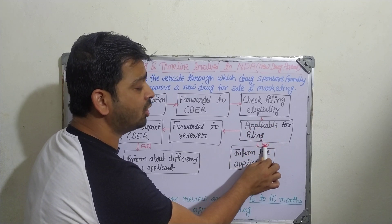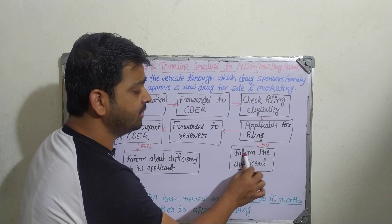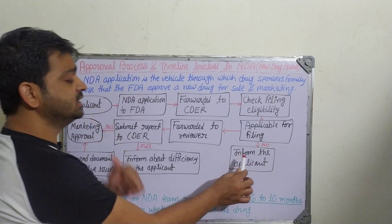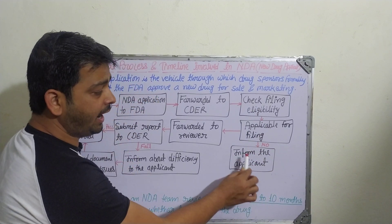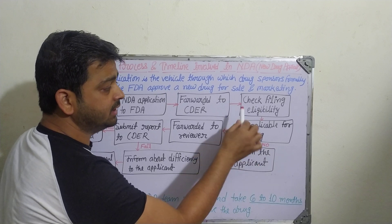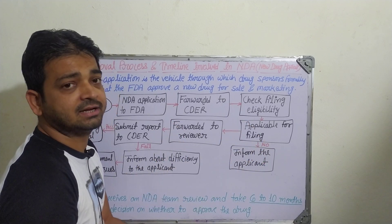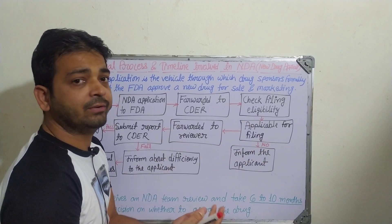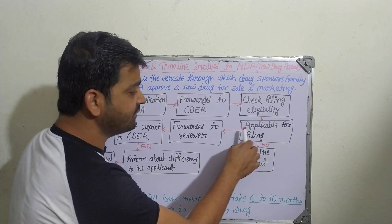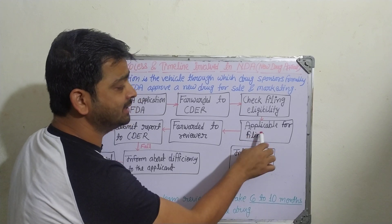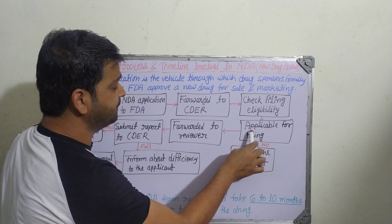If the application is found not applicable for filing, they will inform the applicant — the sponsor or manufacturer — and it will go for ratification. Whatever deficiencies are there, those will be ratified, and further they can re-apply.